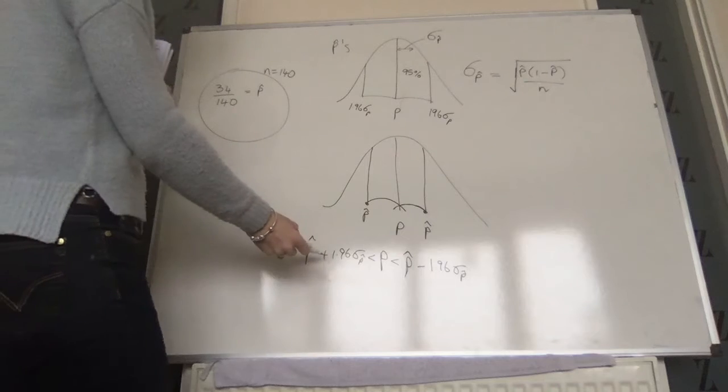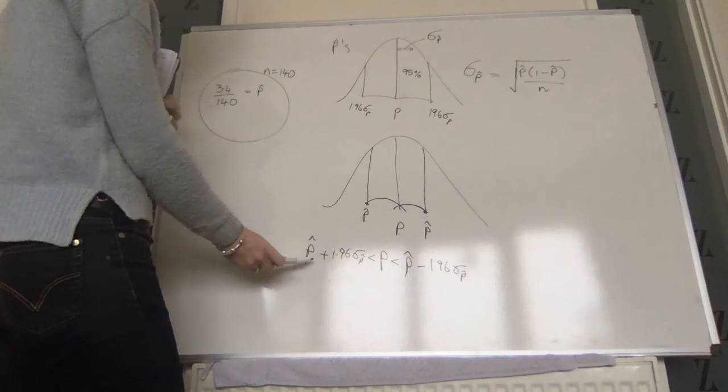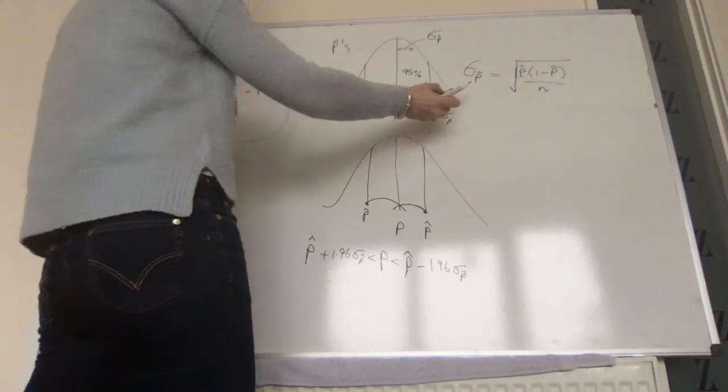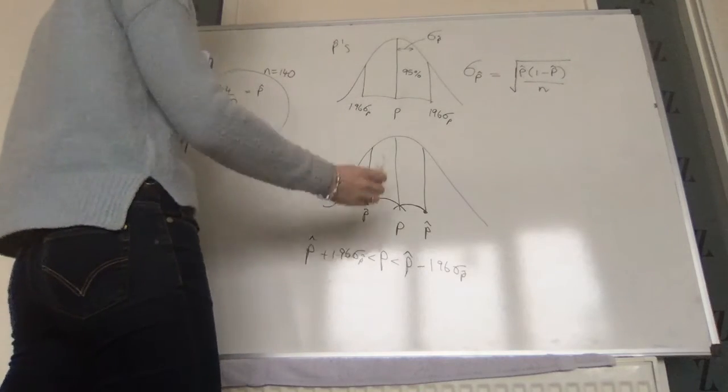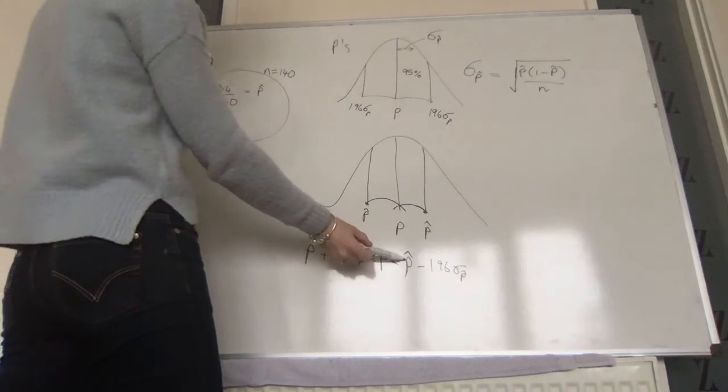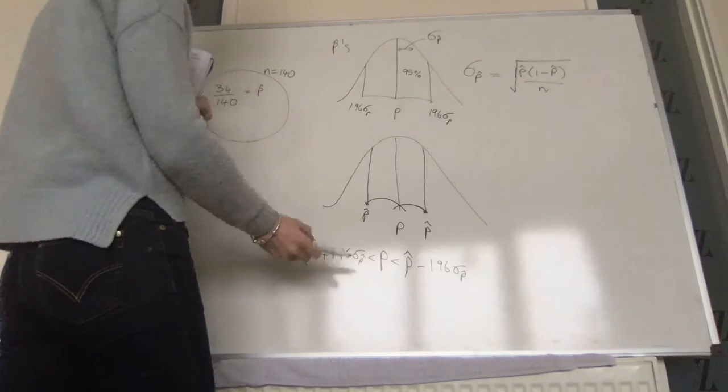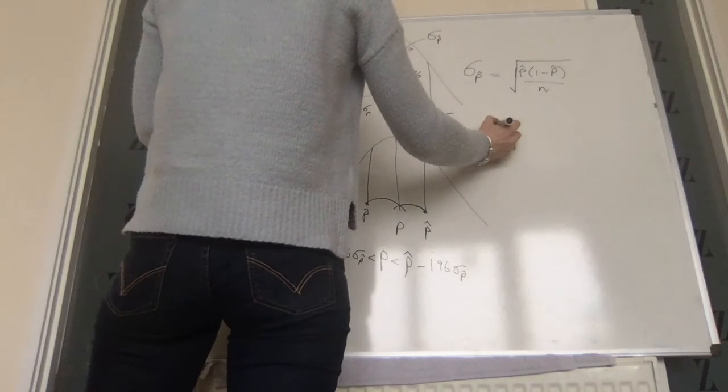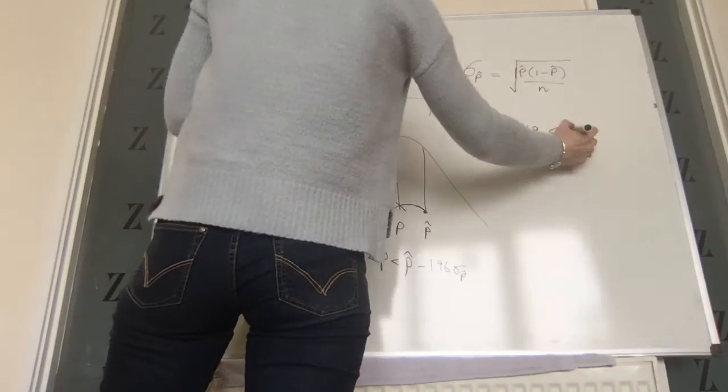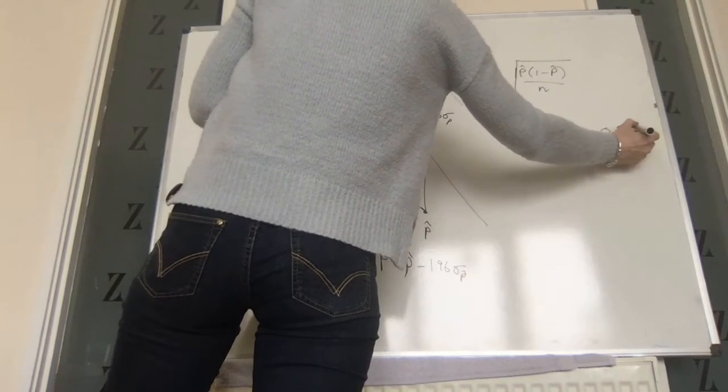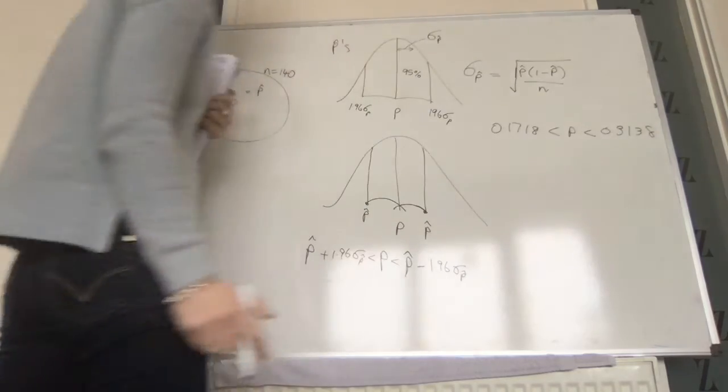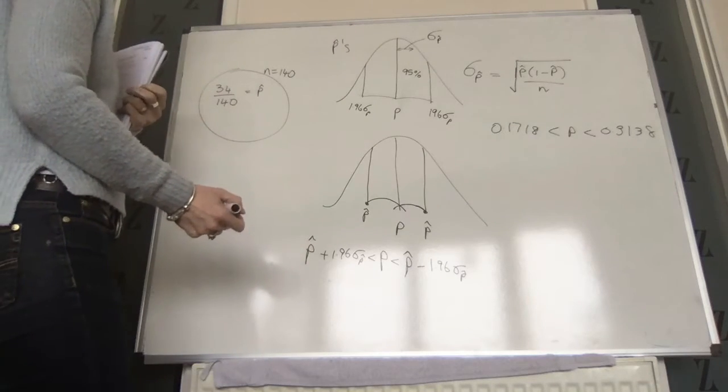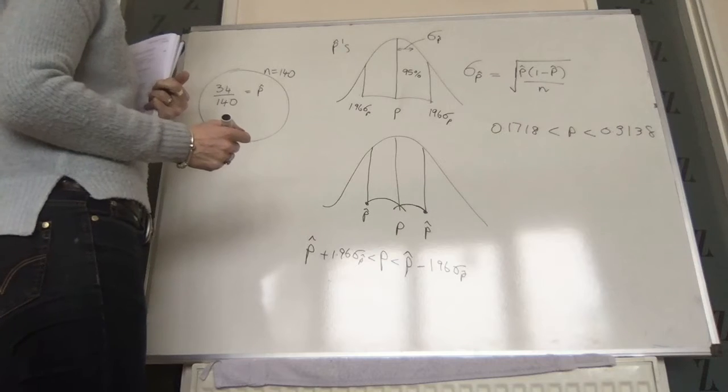That should be straightforward enough. All you need to do now is work out what your sigma p-hat is, that's your sigma for this distribution, by putting in the numbers into the formula. Then you just need to take your p-hat and add 1.96 times that number and subtract 1.96 times that number. So that should give you 0.1718 to 0.3138, and that's the interval in between which you are 95% confident your actual proportion of computers that are damaged lies.